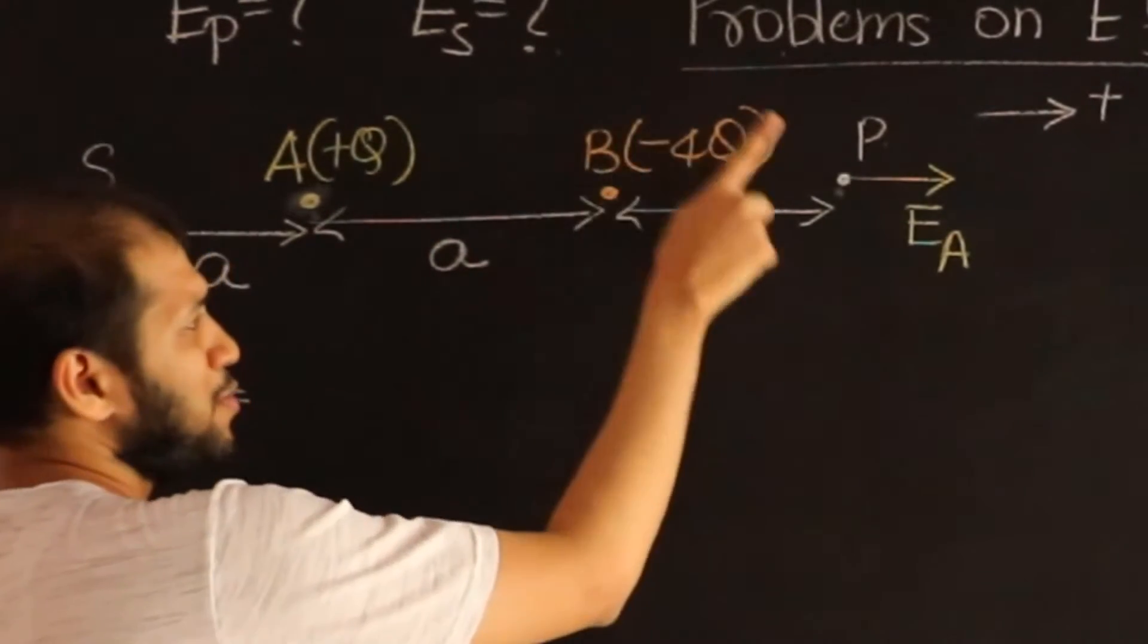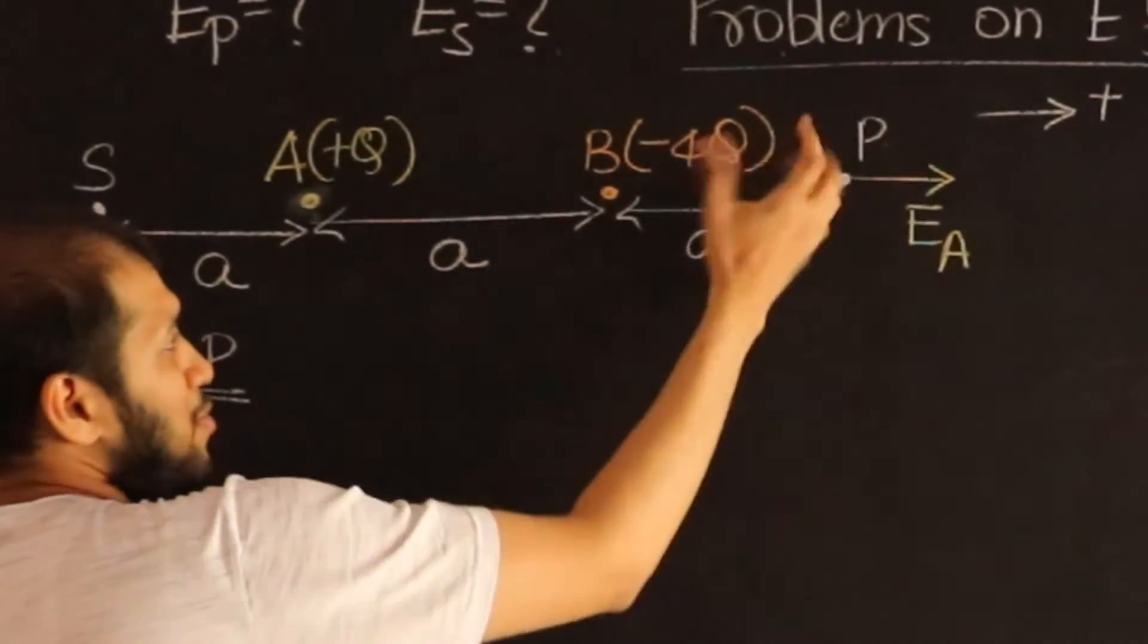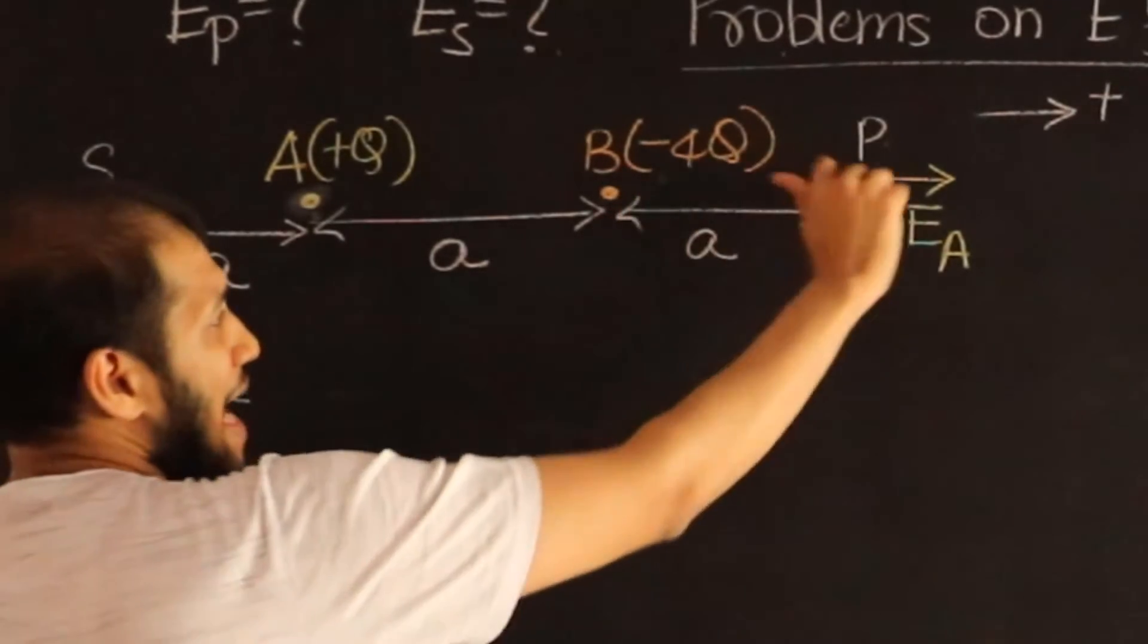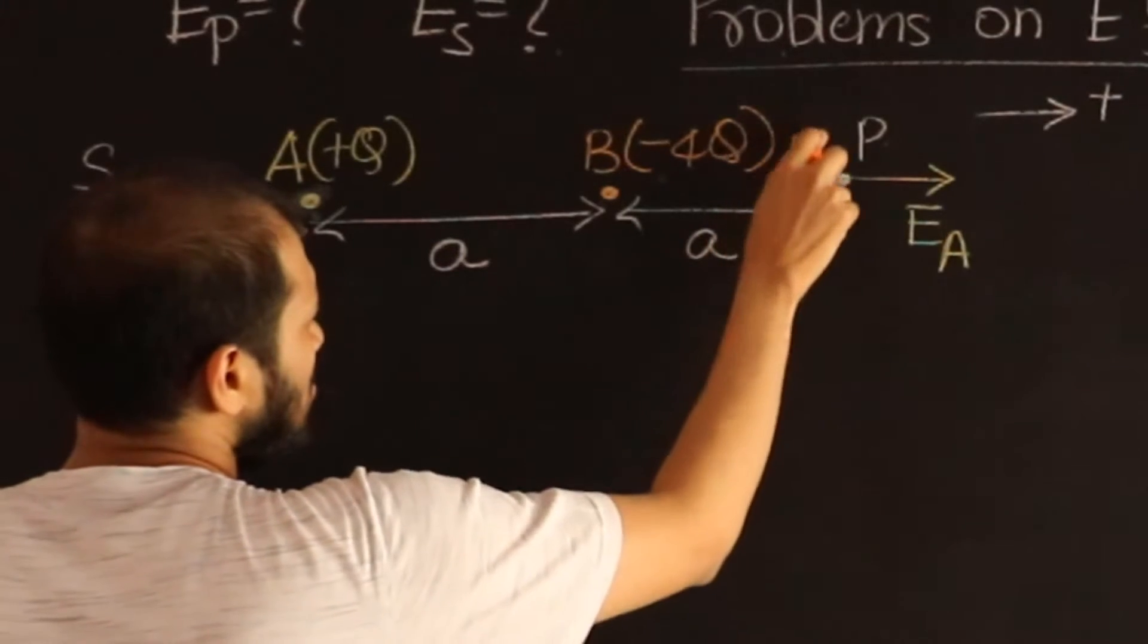Similarly, charge B is going to produce a field at this point P, and that field will be inwards, it's going to come towards, because it's a negative charge, and that field will be towards the left. So let's call that as E_B.